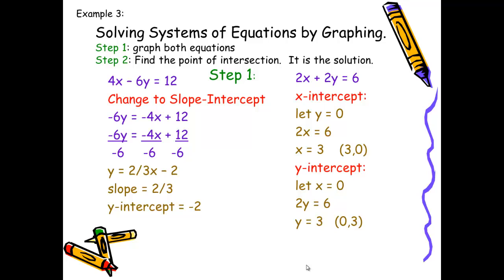In example three, we solve a system of equations by graphing. There are two steps: first, graph both equations; second, find the point of intersection, which is the solution. I'm given 4x minus 6y equals 12 and 2x plus 2y equals 6. For the first equation, I'll convert it to slope-intercept form. Starting with 4x minus 6y equals 12, I subtract 4x from both sides to get negative 6y equals negative 4x plus 12, then divide all terms by negative 6, yielding y equals two-thirds x minus 2. This equation has a slope of two-thirds and a y-intercept of negative 2.